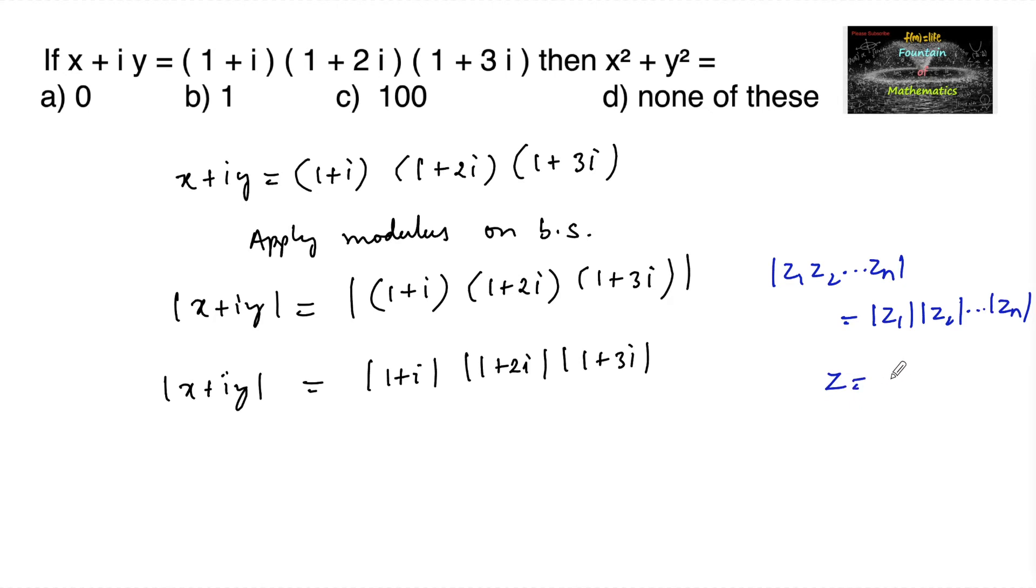For any complex number z equals a plus ib, mod z is equal to root over a square plus b square. So we can write root over x square plus y square is equal to square root of 1 square plus 1 square into square root of 1 square plus 2 square into square root of 1 square plus 3 square.